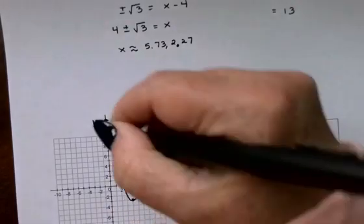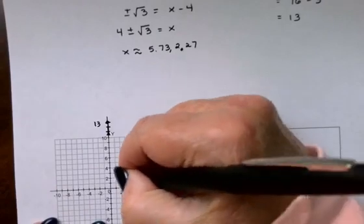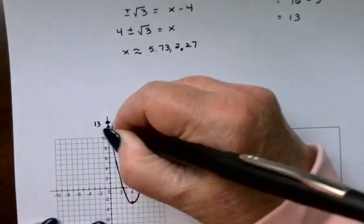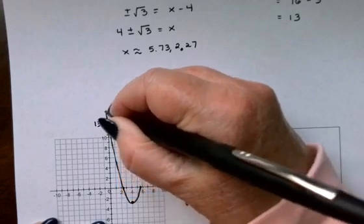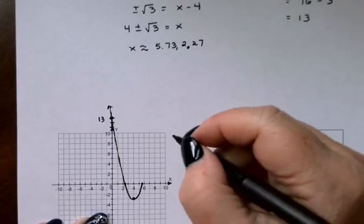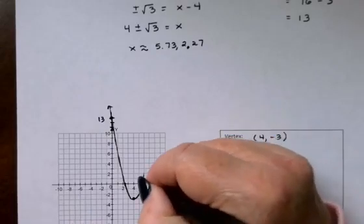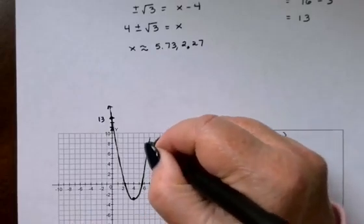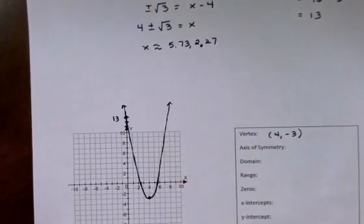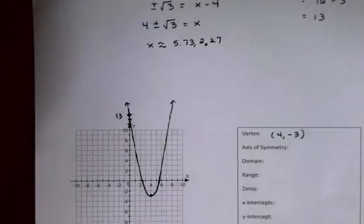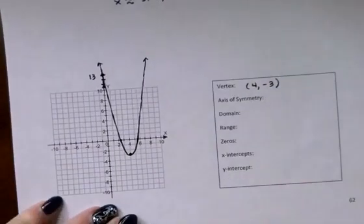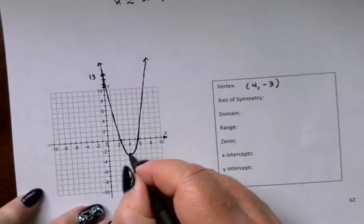So when I go to draw my graph, this goes up really fast. It doesn't even hit the y-axis until we get all the way up here to 13. The other side will go up similarly, like so. All right. Let's start filling in our chart here. We already identified the vertex right here at (4, -3).